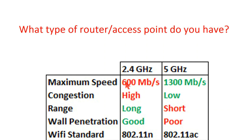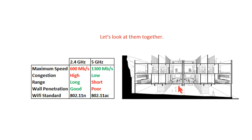The 2.4 gigahertz has a very long range but low speed. The 5 gigahertz modem is faster but has shorter range. And to clarify: this 5 gigahertz is not the one being claimed to cause COVID-19 — that is false. In terms of wall penetration, the 2.4 gigahertz penetrates walls well, while the 5 gigahertz has poor wall penetration. To check which modem type your router has, look underneath it: if you see 802.11ac or just 'ac', it's a 5 gigahertz; if you see 802.11n, it's a 2.4 gigahertz.